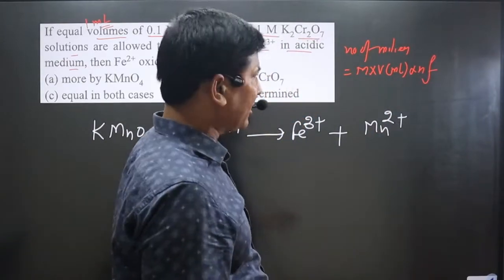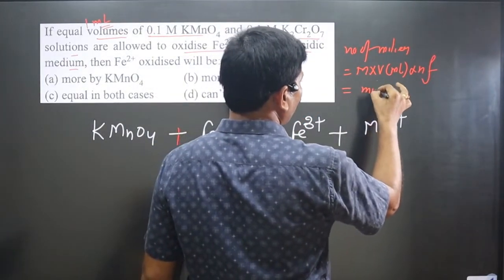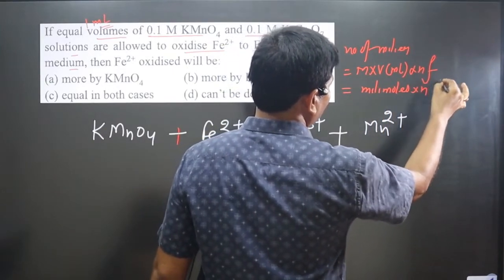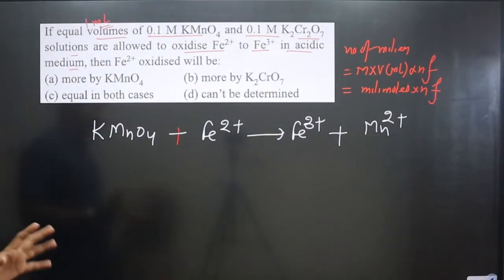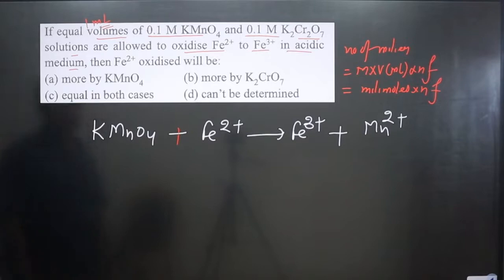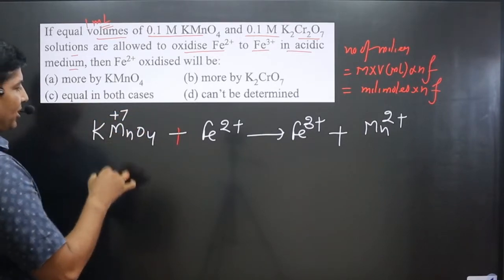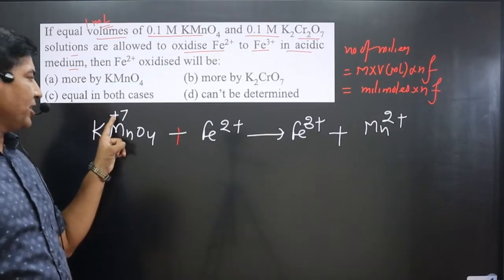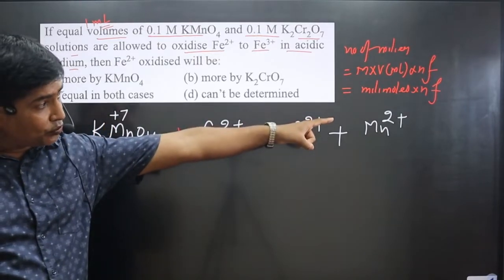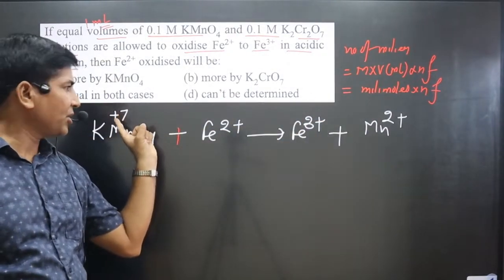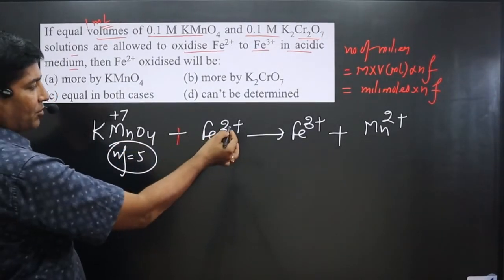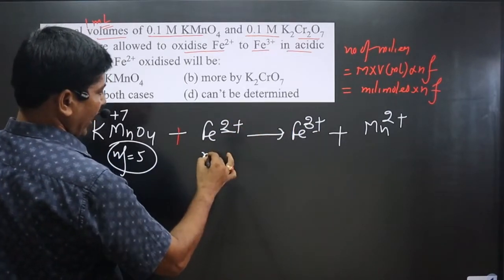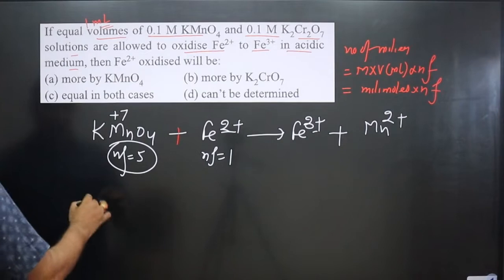If molarity for one substance is not given, we use millimoles × n-factor. We need to calculate the n-factor for KMnO₄. We write the oxidation number of manganese on both sides: Mn is +7 on the left side and +2 on the right side. The difference is 7 − 2 = 5, so the n-factor value for KMnO₄ is 5.